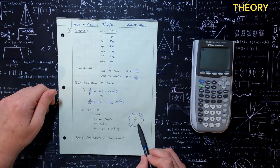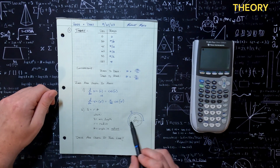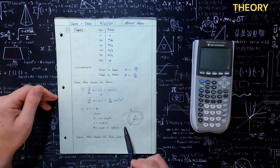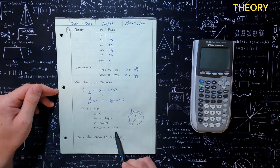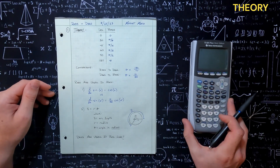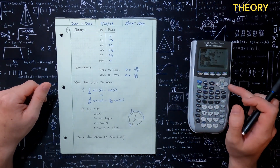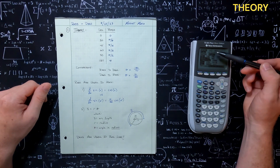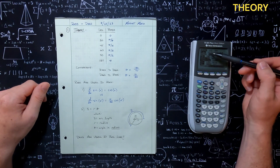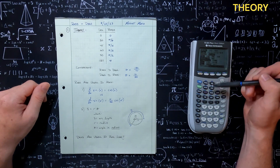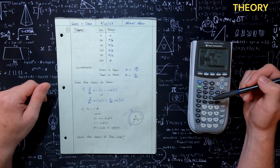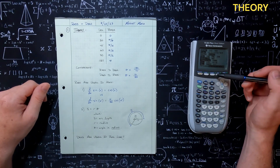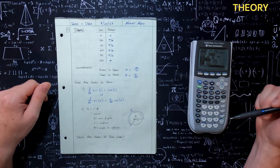So here we have a circle with radius R. We have our theta, and we can use this to find any arc length on this circle if and only if that theta is given in radians. And one thing I want to point out in your calculator: if you go to mode, it has on TI-84 and TI-83s a difference between radian and degree mode.